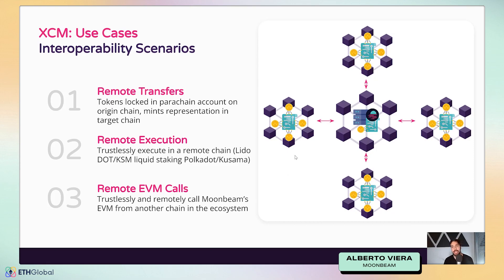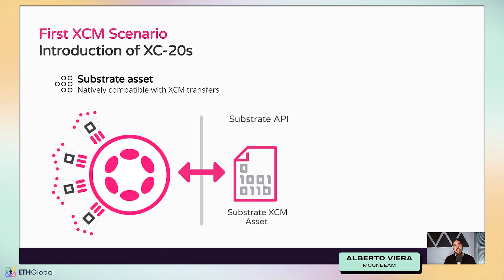There are still some design choices being made to prevent certain types of collusion with EVM transaction hashes, but you can use this on Moonbase Alpha today and projects are already working on integrating this with their tech stacks. This is really exciting because projects that don't have any VM will be able to access any VM through XCM in Polkadot.